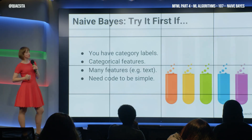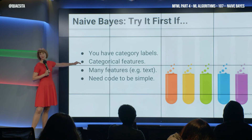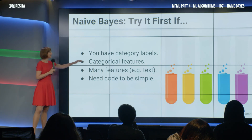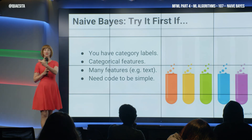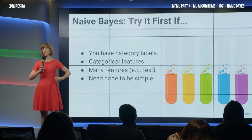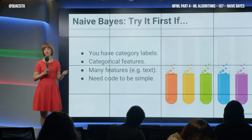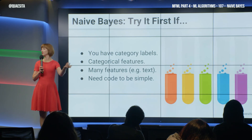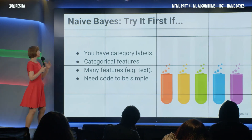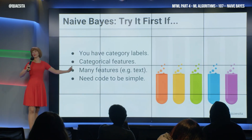So, Naive Bayes — when are you going to try it first? If you have category labels and category features, like text for example. Having category features is no sweat; it's very easy to turn continuous features into categorical ones. You can take measurements of things like torso length and width and turn that into small, medium, large with no problem. Going from categories in the opposite direction, that's the hard one. You can always turn your features into categories. When there are many features, this is a great idea — it handles a lot of features.